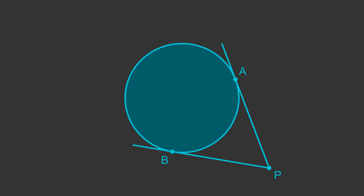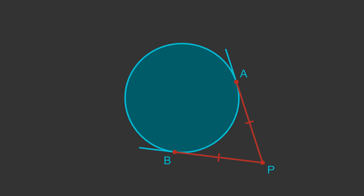A tangent is a line that just touches the edge of a circle without crossing it. For any point P that is outside the circle, we can draw two tangents to the circle. The tangents touch the circle at points A and B. Length PA is equal to PB. This is always true for any point that is outside the circle.